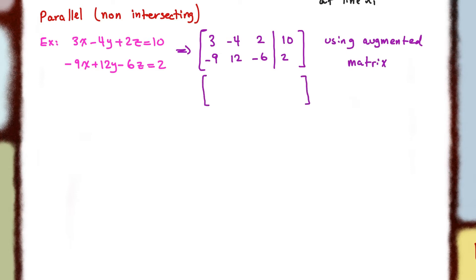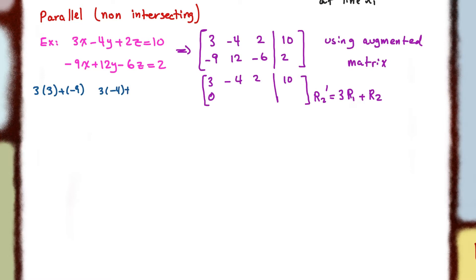The lowest common multiple for the first value is nine. So we're going to multiply the first row by three and add it to row two in order to get zero. By doing this, we get three times three plus negative nine, which is zero. We get three times negative four plus twelve, which is zero. And three times two plus negative six is equal to zero. On the right-hand side, we get three times ten plus two, which gives us 32.